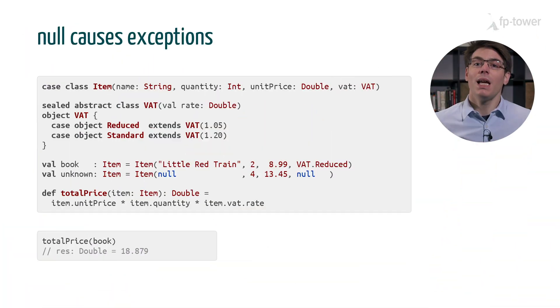Let's have a look at a few examples. Say we want to calculate the total price of an item. A typical implementation will multiply the unit price by the quantity and then apply the VAT rate on top.